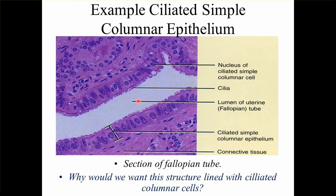The ovum travels from the infundibulum, comes to the ampulla and waits there for two days, then has to move to the posterior wall of the uterus if it is going for implantation. There is one more type of cell here called peg cells, which are supporting cells.